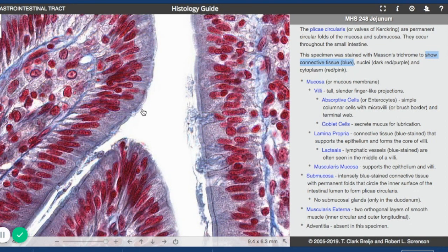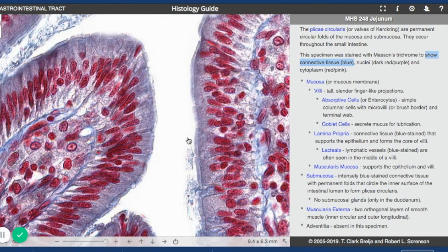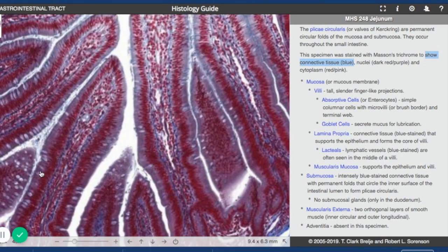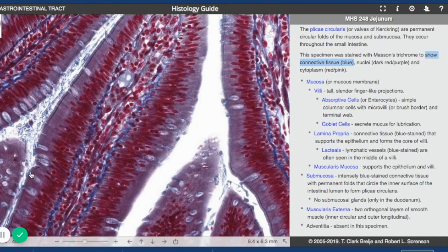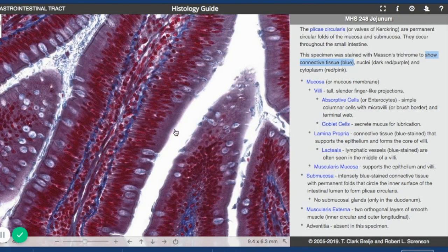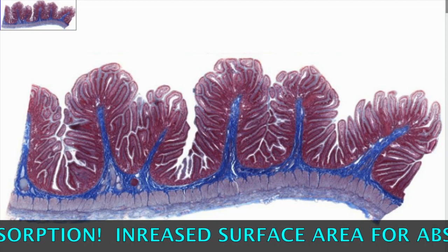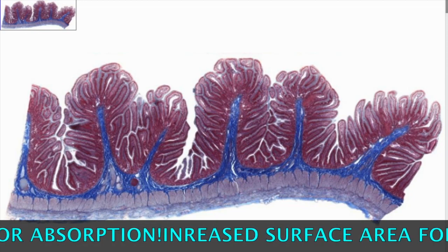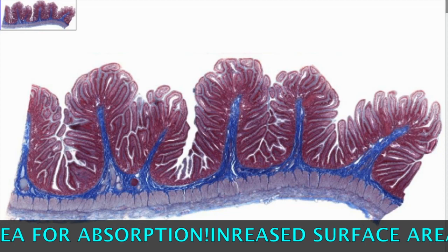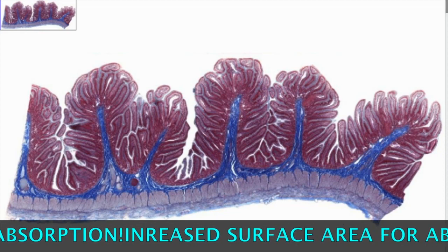The microvilli here are going to appear as a so-called brush border, so you're not going to see those distinct projections as you might see with cilia. Also within that simple columnar lining, you're going to see goblet cells interspersed. When we see these folds and invaginations, we are seeing an increase in surface area, and in the case of the small intestine, this increased surface area allows greater absorption of digested products into the bloodstream.